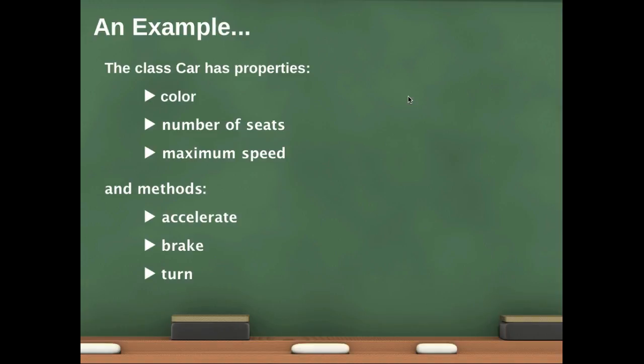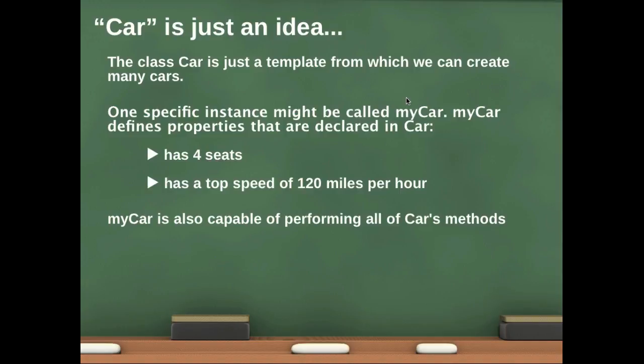A car would also have methods: accelerate, brake, turn, and so forth. Now the methods are defined in the class because they function in the same way for each instance of the class.